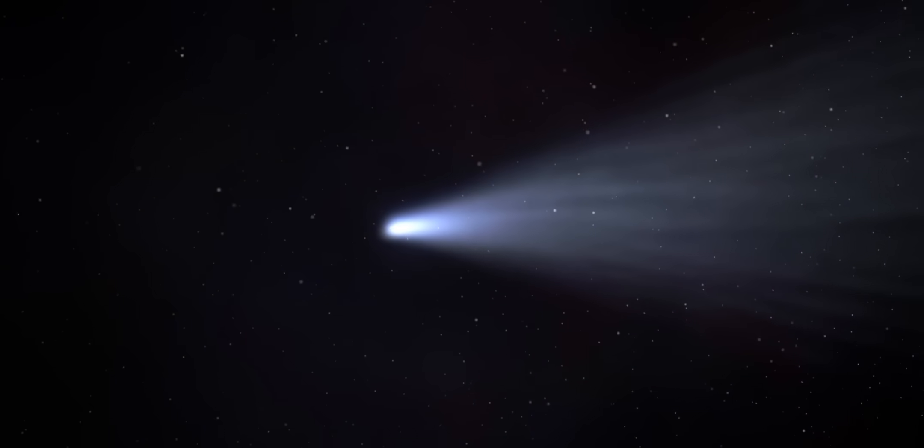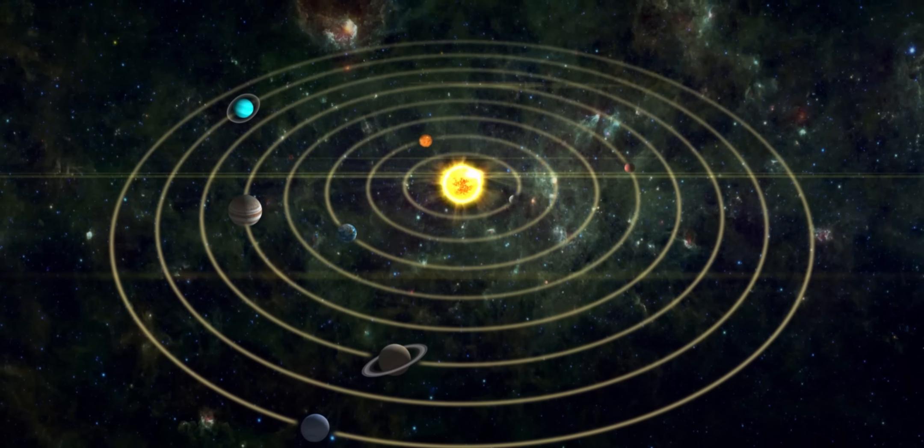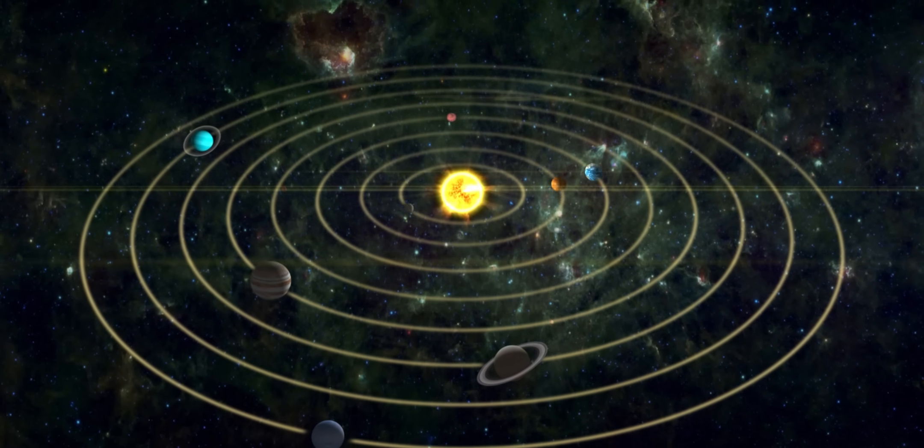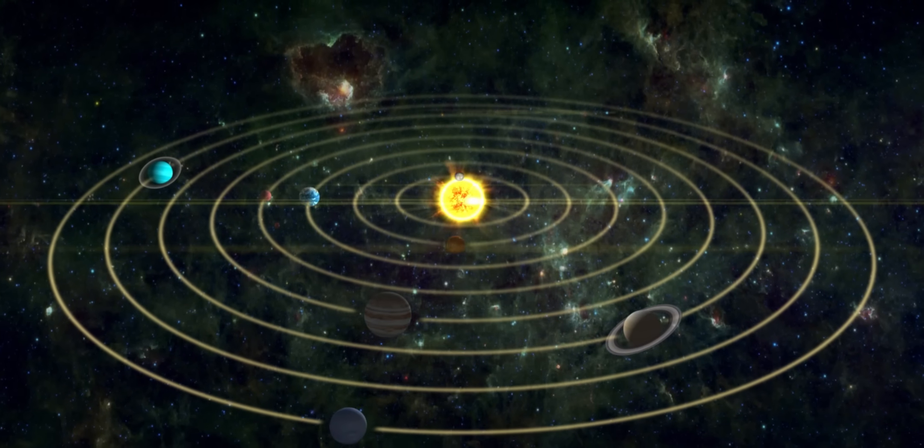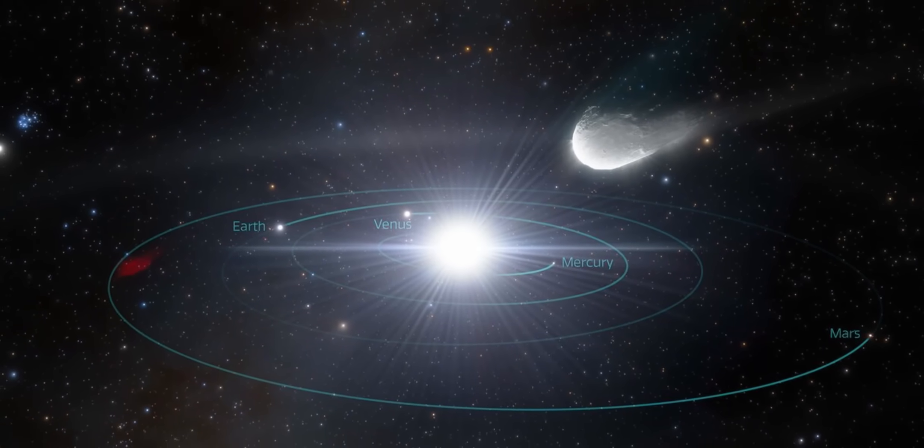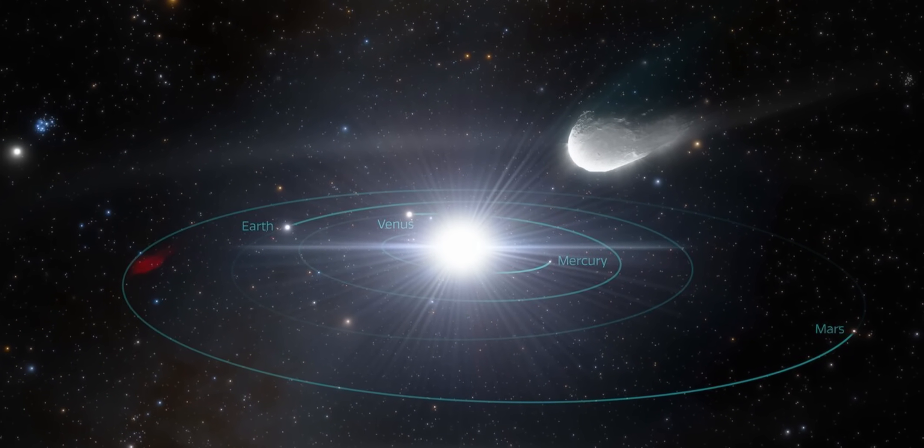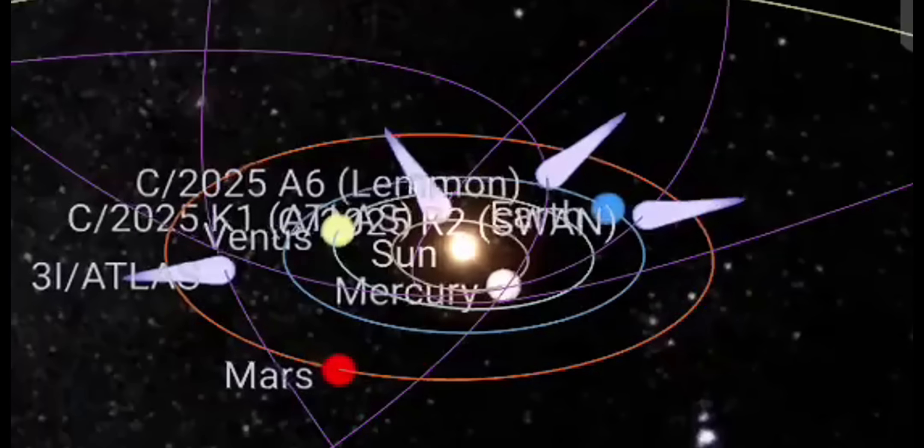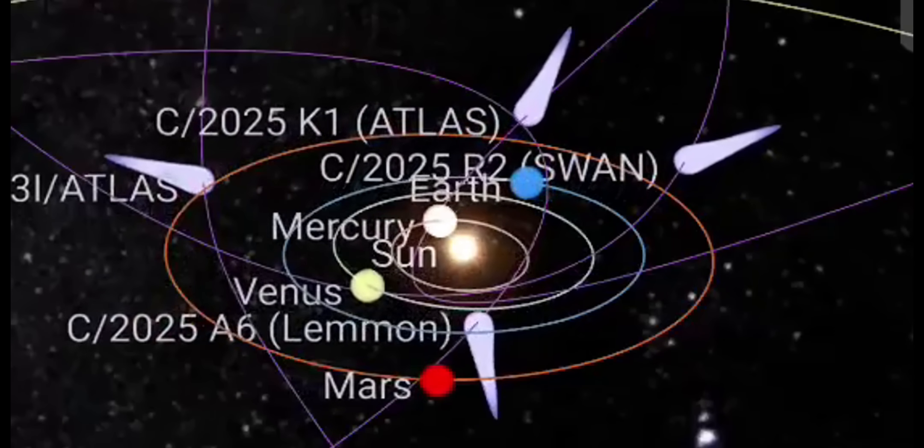And then there's the orbit. Our solar system, vast though it is, is structured like a giant disk. The planets all travel around the sun along the same flat plane, circling in the same direction, like dancers moving together on a grand cosmic stage. Most interstellar visitors cut across at wild angles. Their orbits steep and random. But not Atlas. Atlas moves along almost the exact same plane as our planets, but in reverse, retrograde, against the flow.